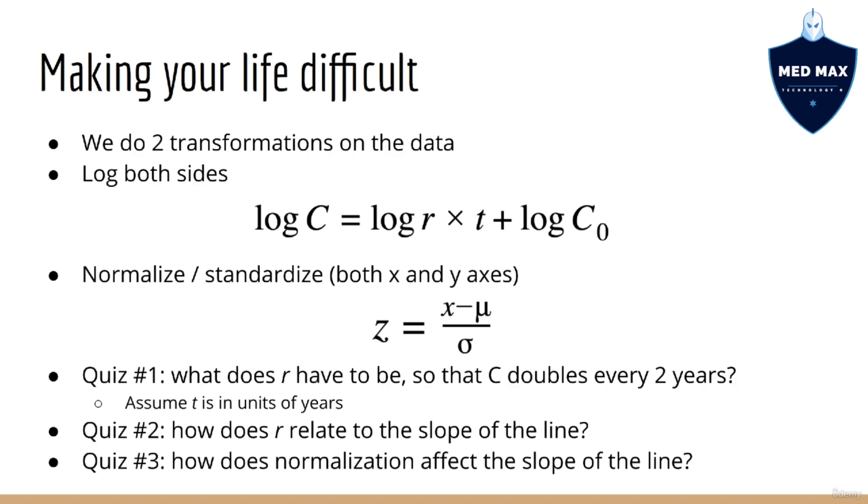The next question you want to consider is, if we take the log of both sides of this equation, how does that value of r relate to the slope of the line? And finally, if we normalize the data in both the x and y axes, how does that affect the slope and intercept of the line? We'll go through these calculations in the next lecture in detail, but the main point is, we are not going to get the answer directly just by fitting a line to the data. For example, just because the transistor count doubles every two years, this does not mean the slope of the line is going to be two. It's going to be related to the number two somehow, but to find out exactly how, you have to do the math.